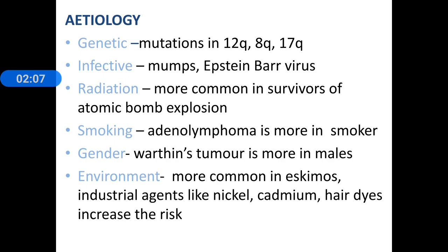Common etiologic factors include genetic mutations such as 12Q, 8Q, and 17Q, which are known to result in malignancy. Infective causes include mumps infection and Epstein-Barr virus infection. Previous exposure to radiation is also a factor — the incidence of salivary gland tumours in atomic bomb survivors has been found to be high. The incidence of Warthin's tumours is higher in smokers and in males. Environmental factors such as exposure to nickel, cadmium, and dyes also increase the risk, and the condition is more common in Eskimos.